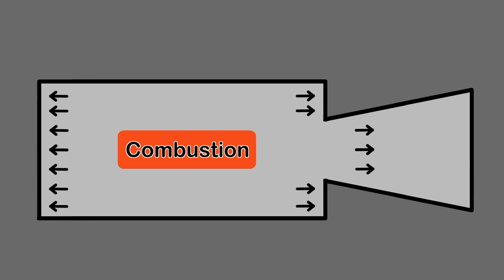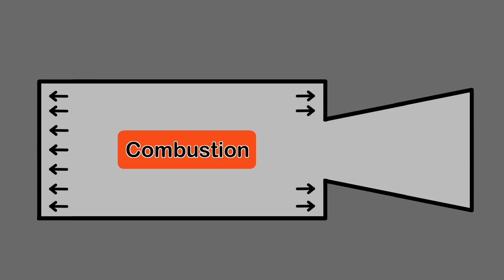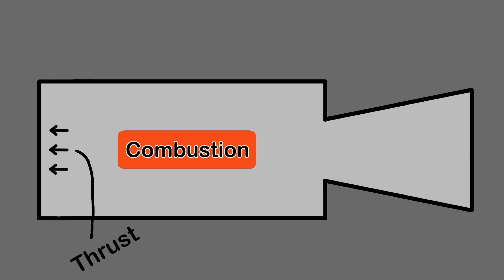There is no surface on this back casing for the pressure to act on, so we can also eliminate it. Now we can see that there is a remaining leftward force created by the pressures inside the combustion chamber — thrust.